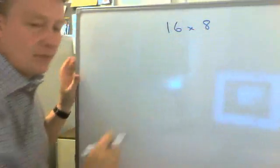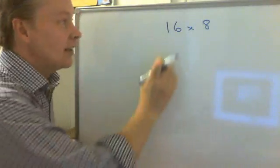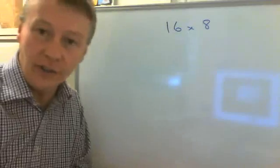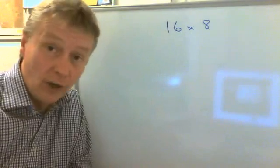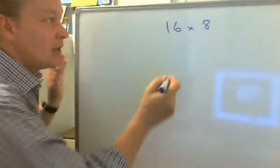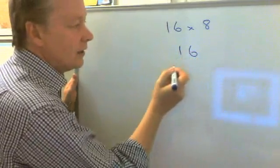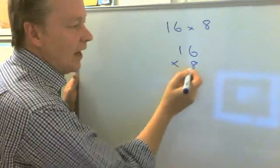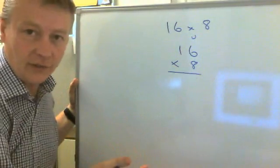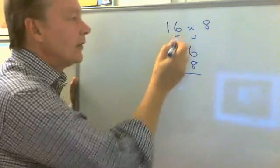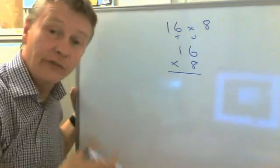It's recognizing that the 6 and the 8 are both units and the 1 is a 10. So what we do is we write that into a column and we say 16 times 8, where the 6 and the 8 are both units and the 1 is a 10.